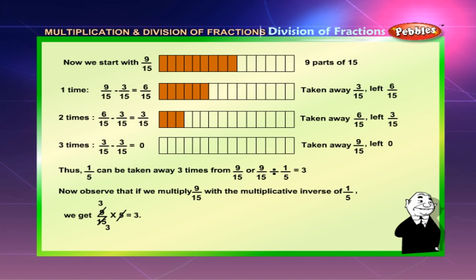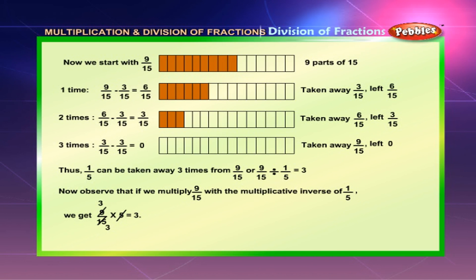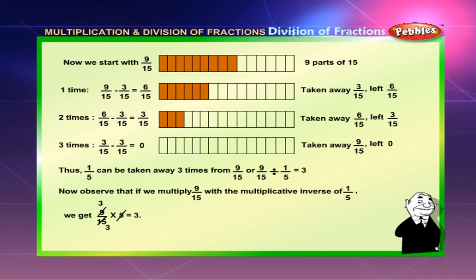Now we start with 9 by 15 — 9 parts of 15. Step 1: 9 by 15 minus 3 by 15 equals 6 by 15. Take away 3 by 15, left 6 by 15. Step 2: 6 by 15 minus 3 by 15 equals 3 by 15. Step 3: 3 by 15 minus 3 by 15 equals 0. Take away 9 by 15, left 0. Thus, 1 by 5 can be taken away 3 times from 9 by 15, so 9 by 15 divided by 1 by 5 is equal to 3.